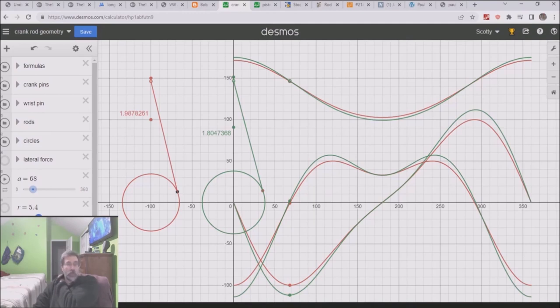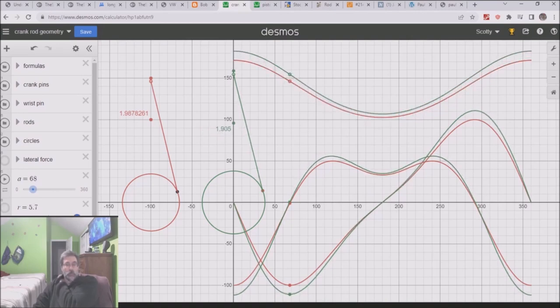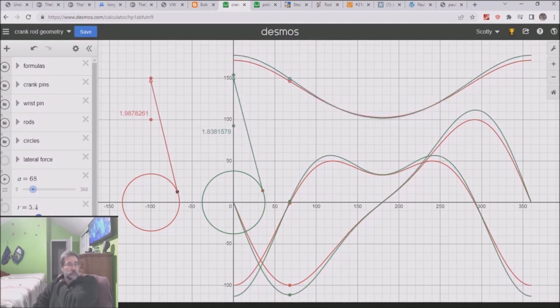We go back to stock and then down. Now let's go to the longer rod. You see some differences. Obviously it's going to stick out the top more. There are some subtle differences. The velocity of the piston doesn't change that much.